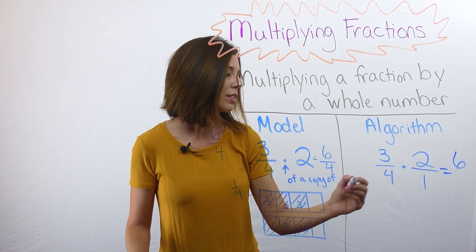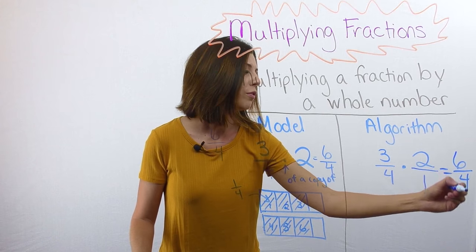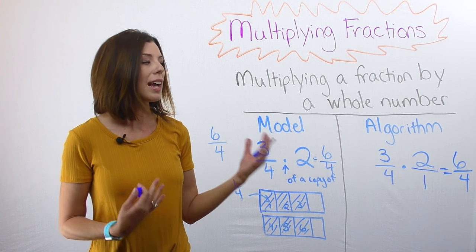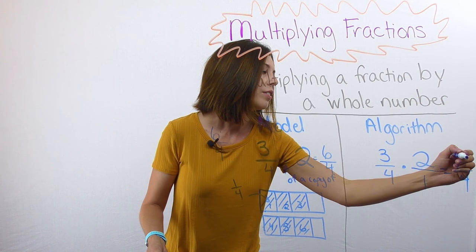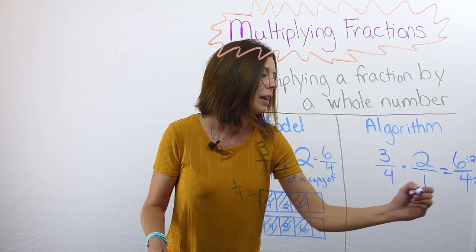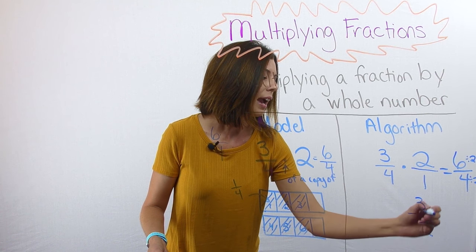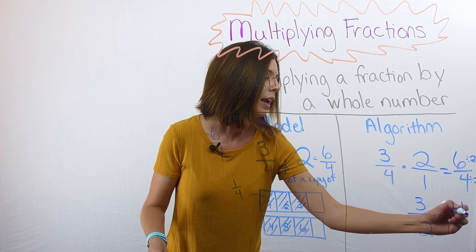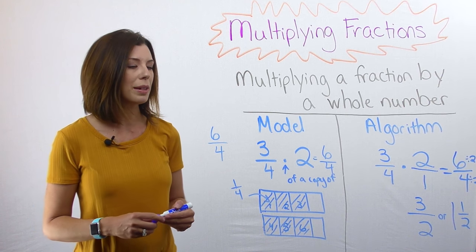So now I'm going to do the same thing. Multiply three times two, which is six. Four times one, which is four. And I get six-fourths. Again, I can reduce, dividing both of these by two. And I'm going to get three halves or one and one-half if I'm making it into a mixed number.